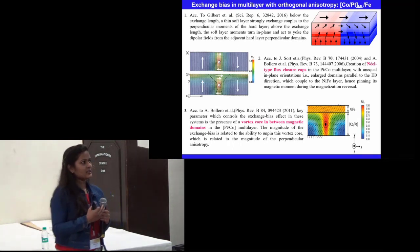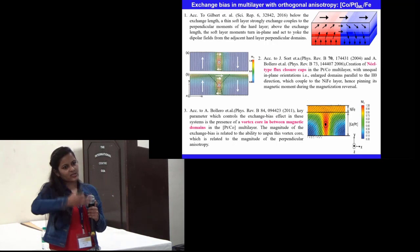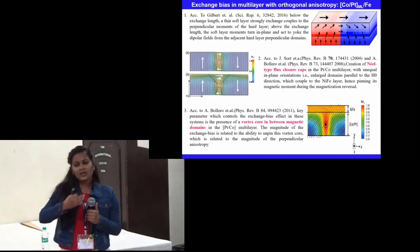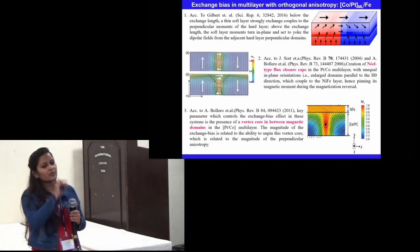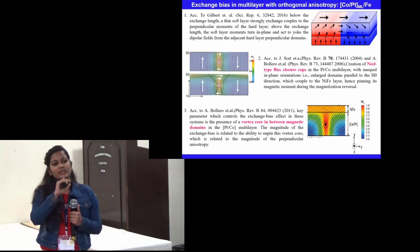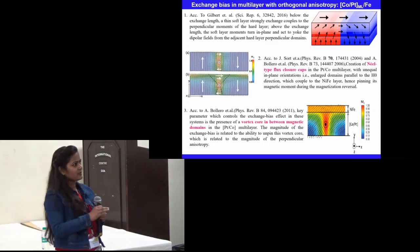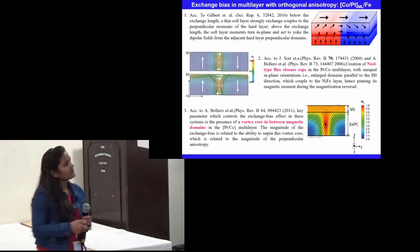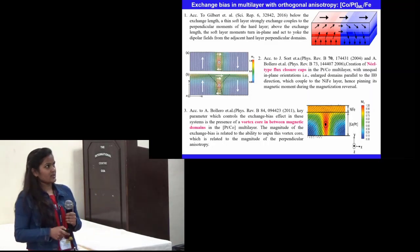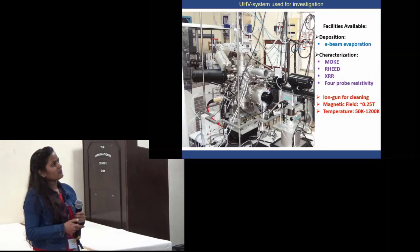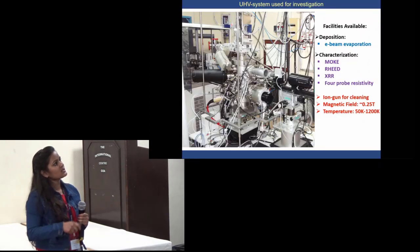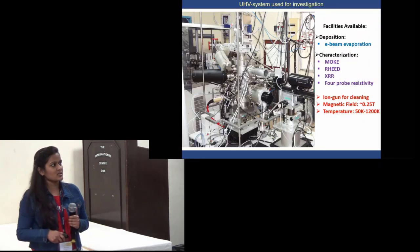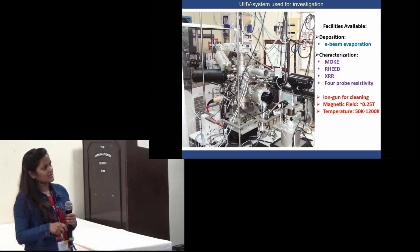However, most of the studies use average magnetization techniques which give the magnetization of the whole layer and do not probe the spin orientation at the interface. Keeping this in view, we have studied this sample, and for initial studies we have used a UHV system at our center with the following facilities.